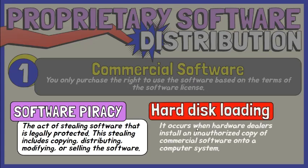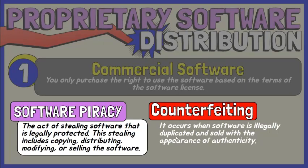Hard disk loading occurs when hardware dealers install an unauthorized copy of commercial software onto a computer system. This occurs when a business sells new computers with illegal copies of software loaded onto the hard disks to make the purchase of the machines more attractive. Counterfeiting occurs when software is illegally duplicated and sold with the appearance of authenticity. It is usually done using a CD burner to produce copies, and counterfeit software is usually sold at a discounted price.